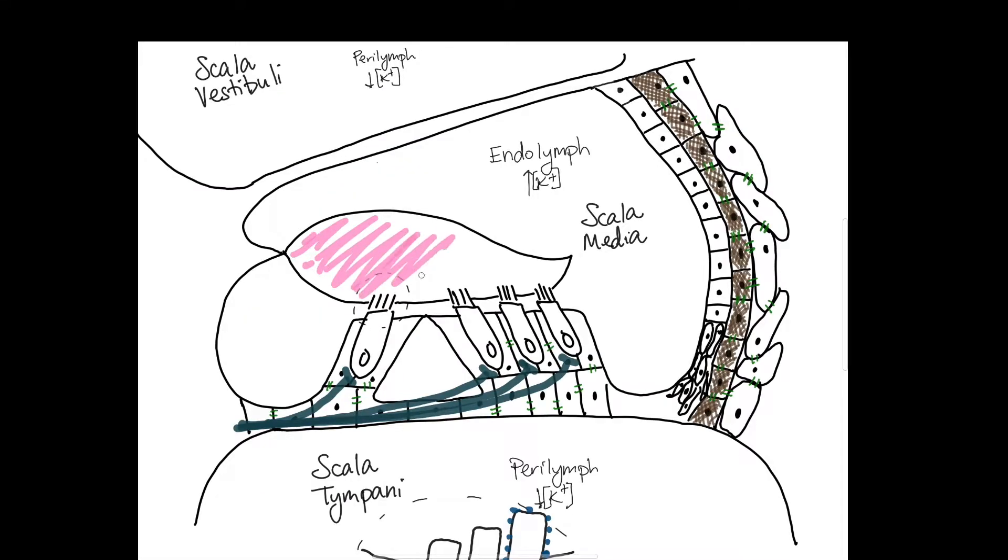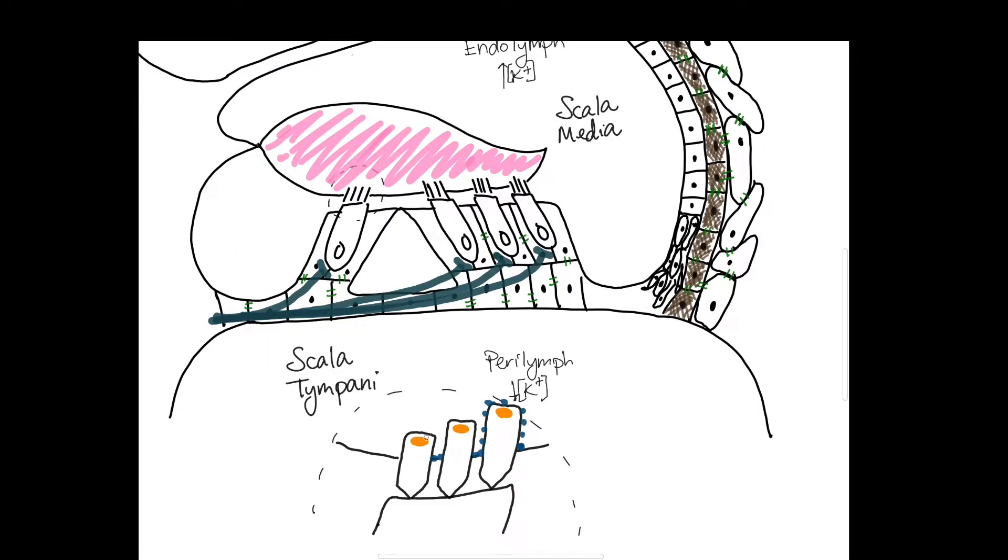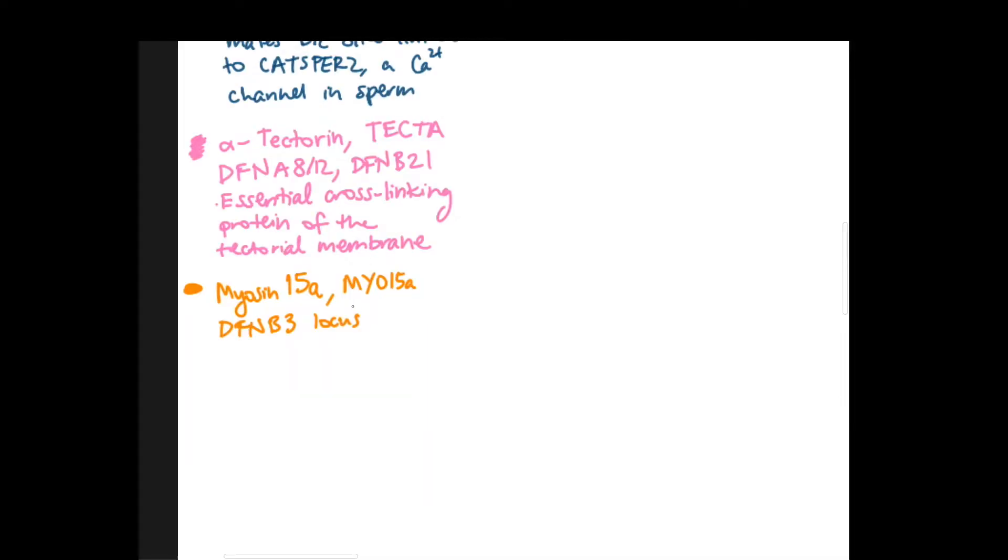Next is the tecta gene that encodes alpha tectorin. It's on the DFNA8 and 12 locus and DFNB21. It's essential for cross-linking the proteins of the tectorial membrane so of course is necessary for hearing function. Myosin 15 is located at the tips of the stereocilia attached to the actin filaments along the length of the stereocilia and it's responsible for stereocilia growth.